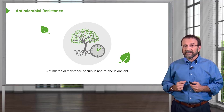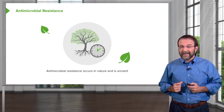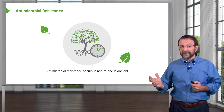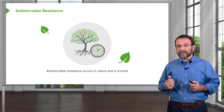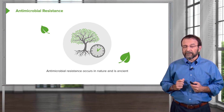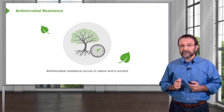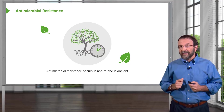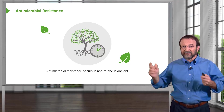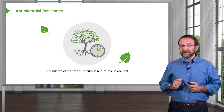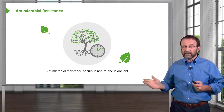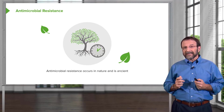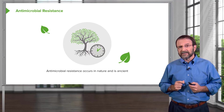Antimicrobial resistance occurs in nature and it's ancient. Bacteria make antibiotics to compete with each other in nature, and many of those we have harnessed for treating infections in people. We know that the genes conferring resistance have been around for thousands of years — we can find them in very old sites on earth, and there is plenty of evidence they existed long before humans developed antimicrobial compounds. So we're really taking advantage of something that exists in nature.